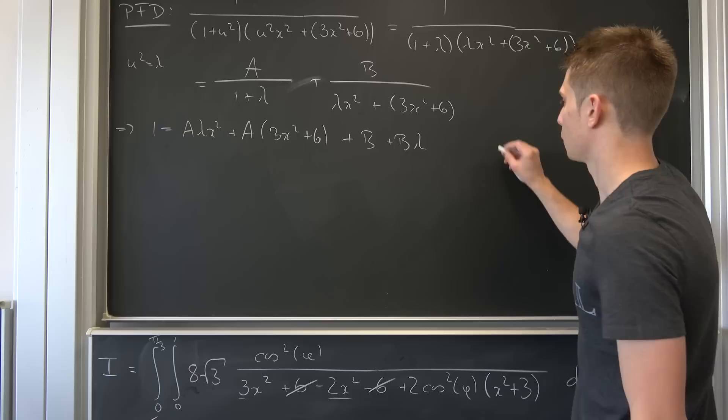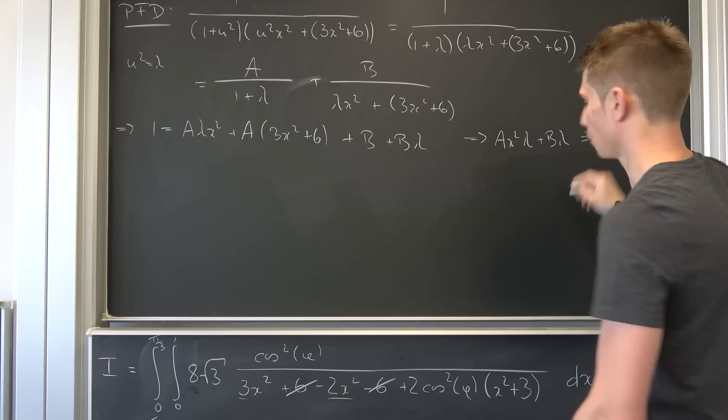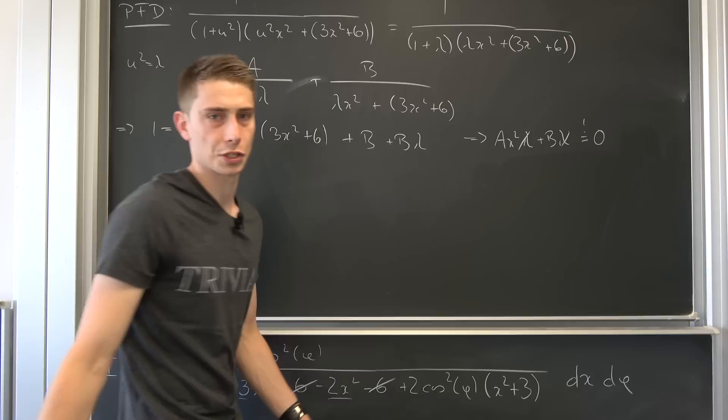Yeah, right. That means that A x squared lambda plus B lambda must be 0 in order to fulfill our little restriction right here, searching for the zeros of this thing.